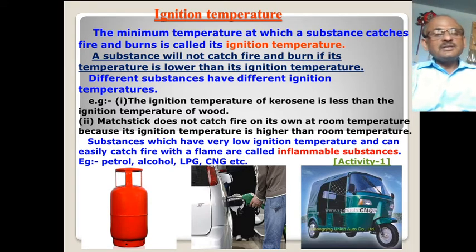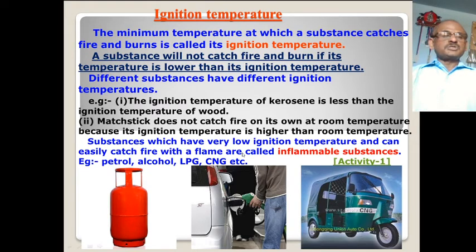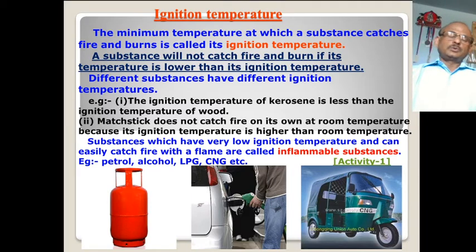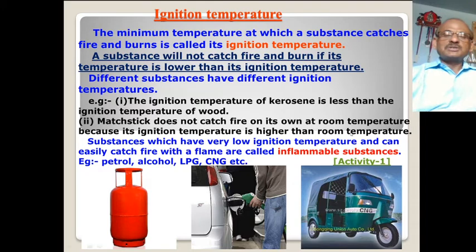The substances which have a very low ignition temperature and can easily catch fire with a flame are called inflammable substances. For example, petrol, alcohol, LPG, and CNG. So we now have a good idea about combustible substances and ignition temperature. Based on this, there is an activity.